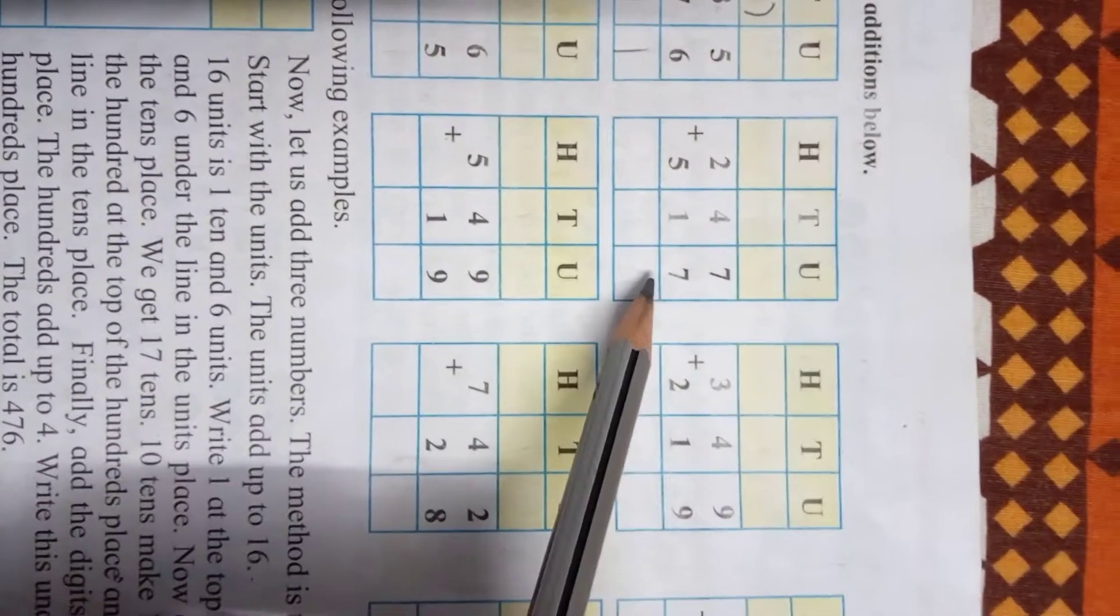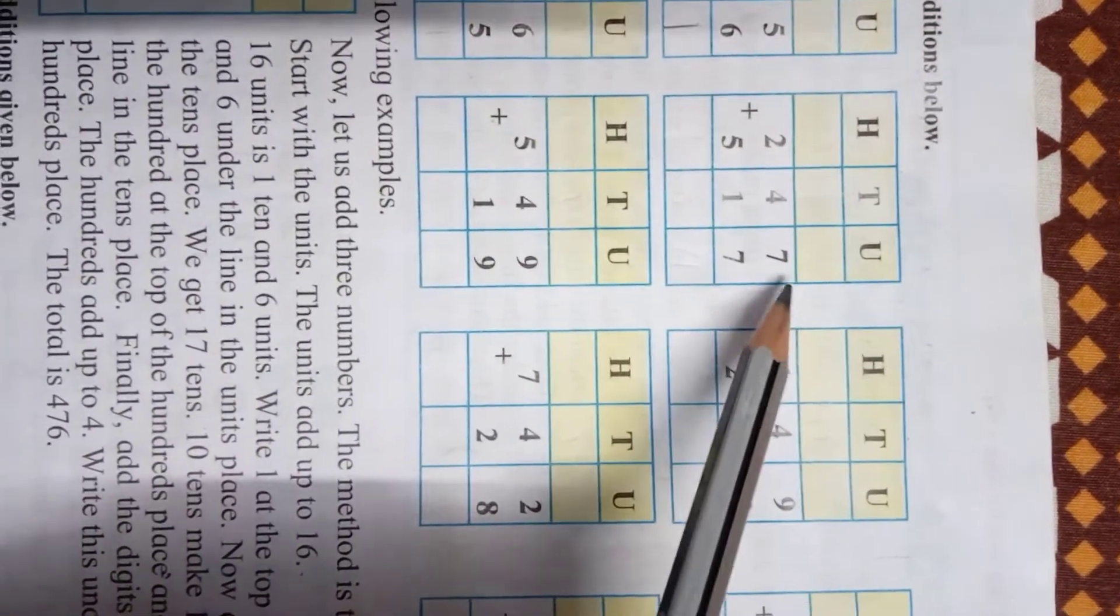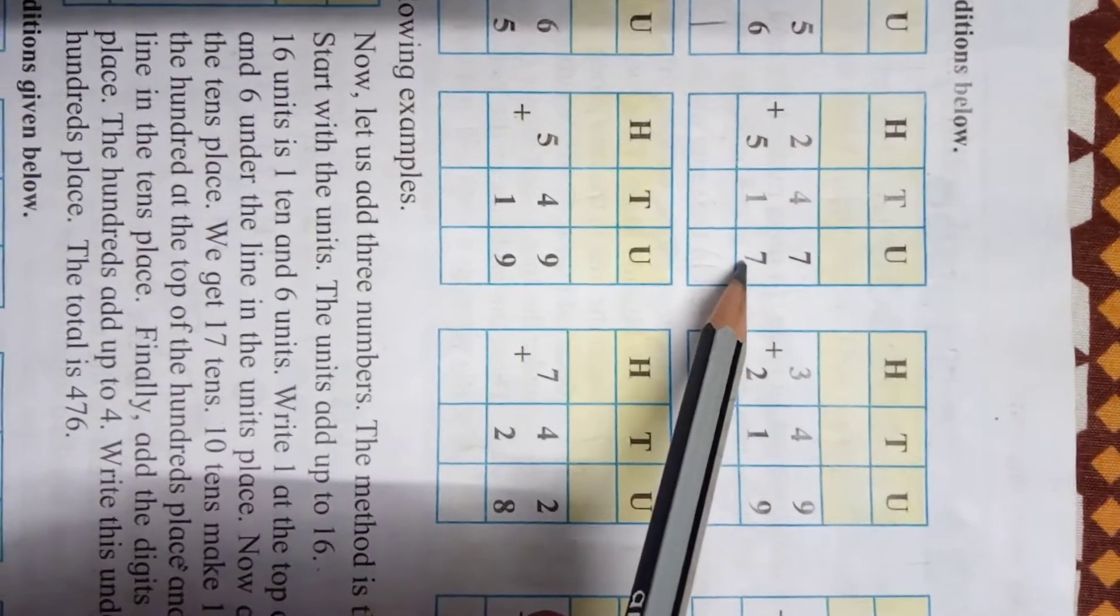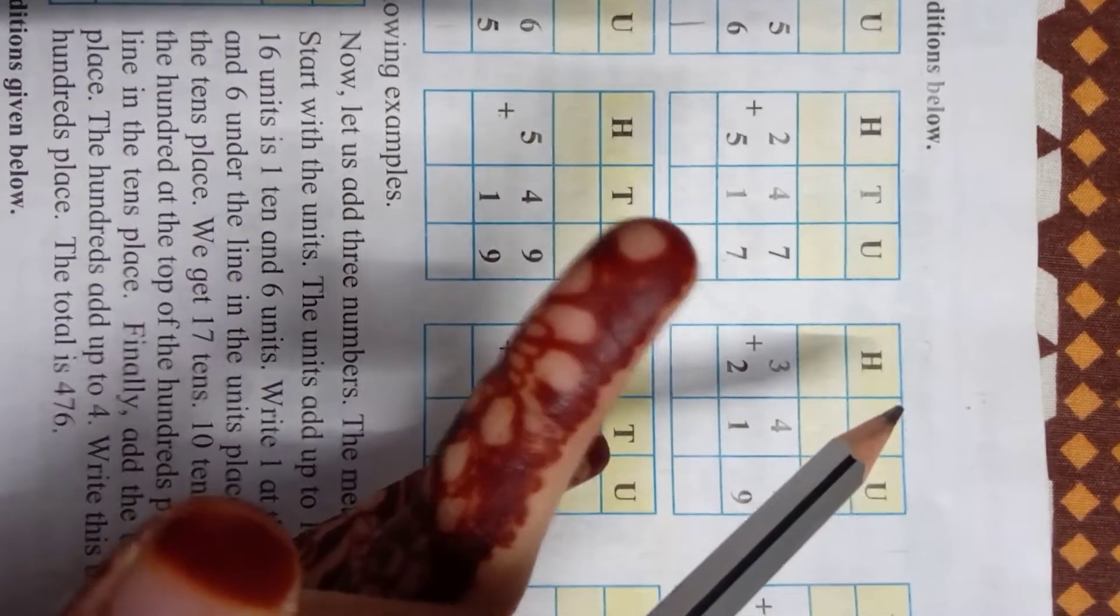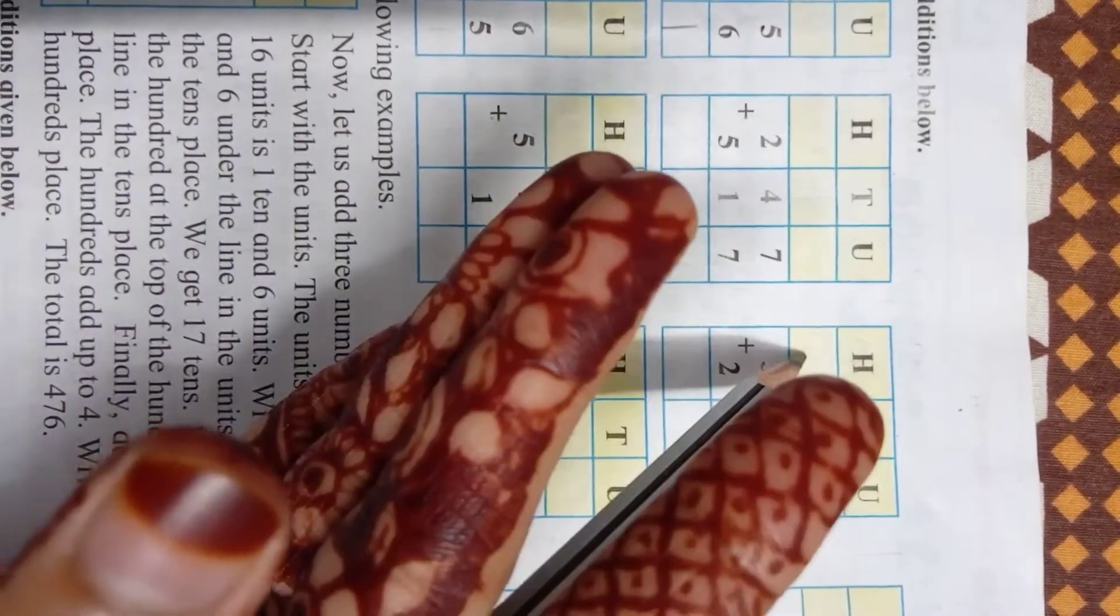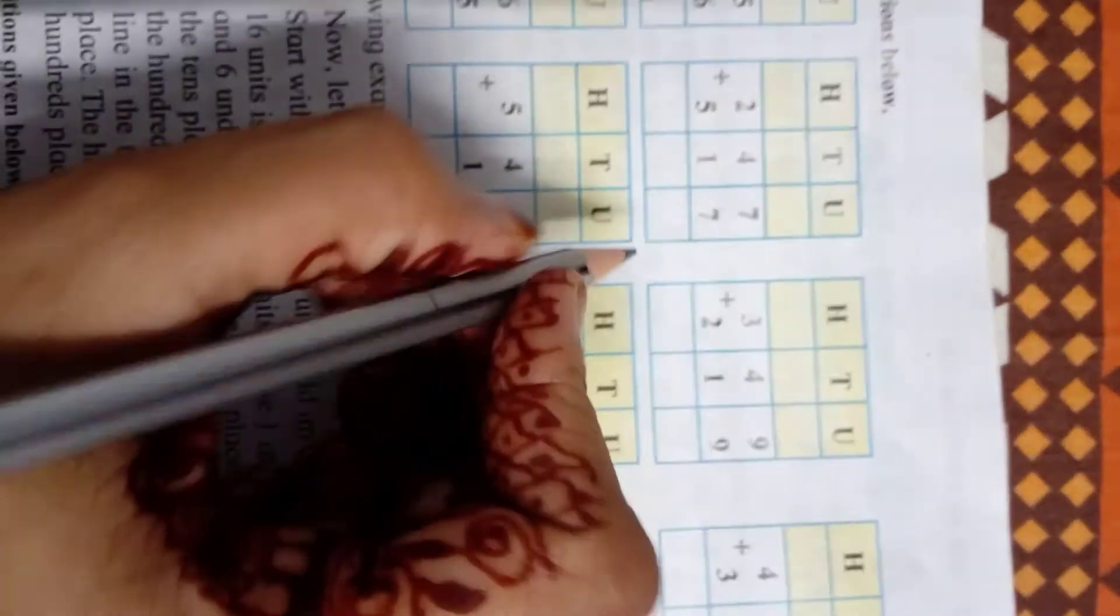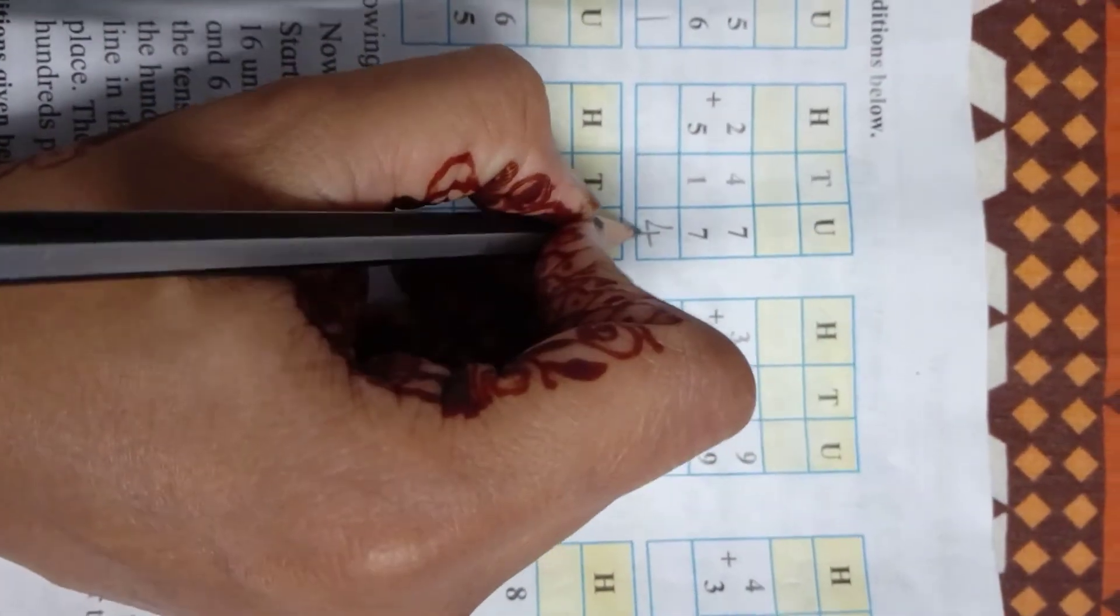Now see the second question. Here again we will count. 7 plus 7, how much? So after 7 we will count 7 fingers, so 8, 9, 10, 11, 12, 13, and 14.